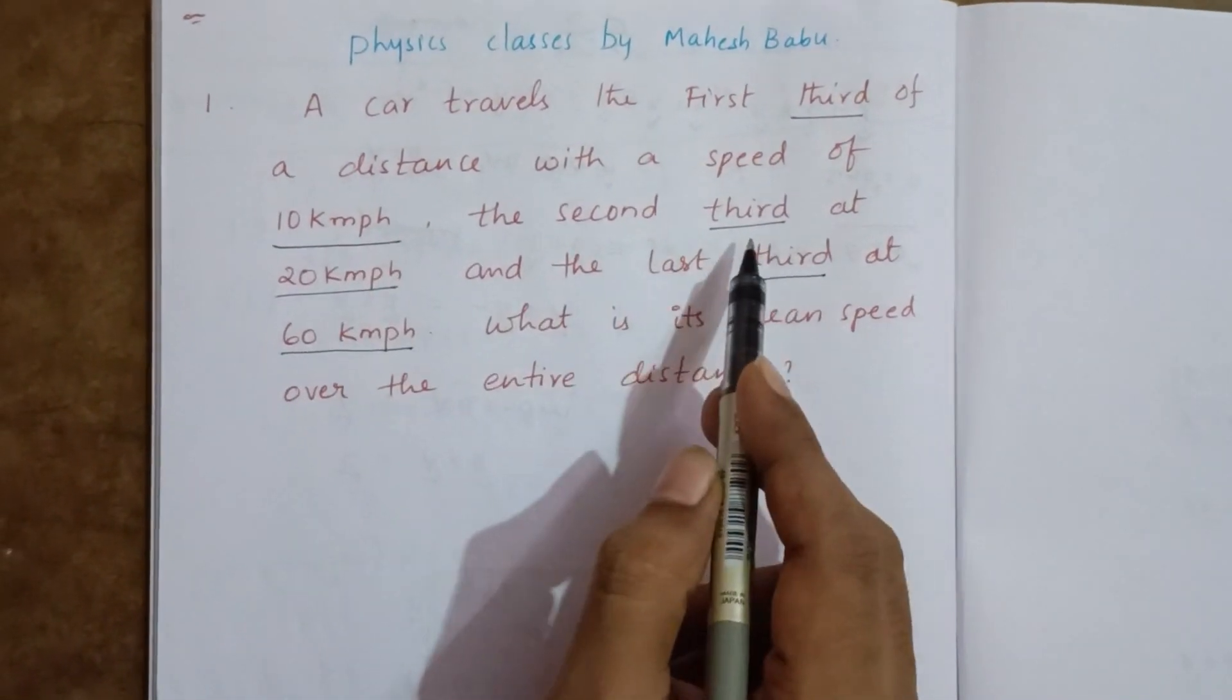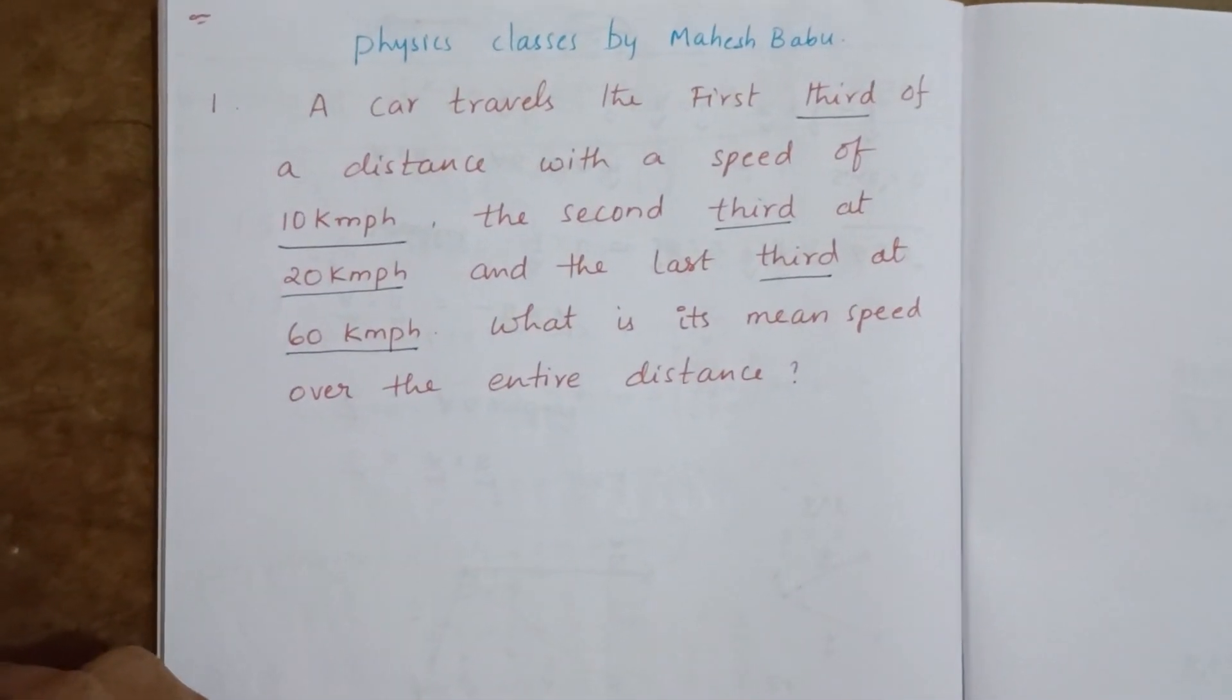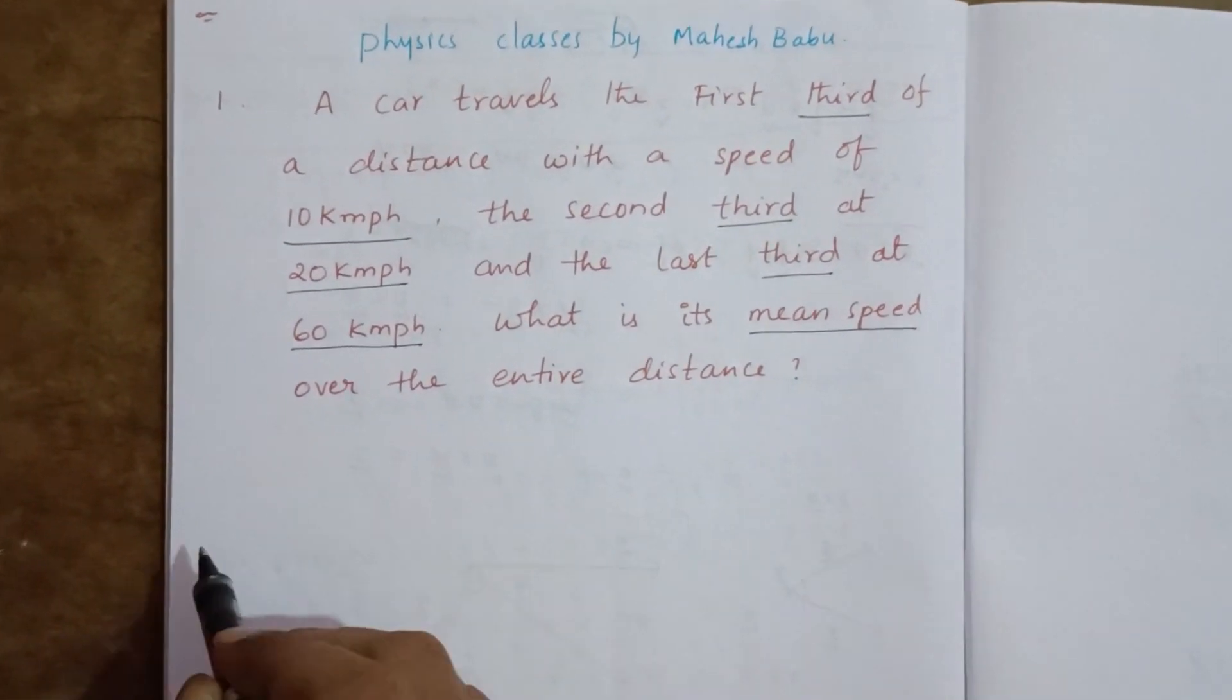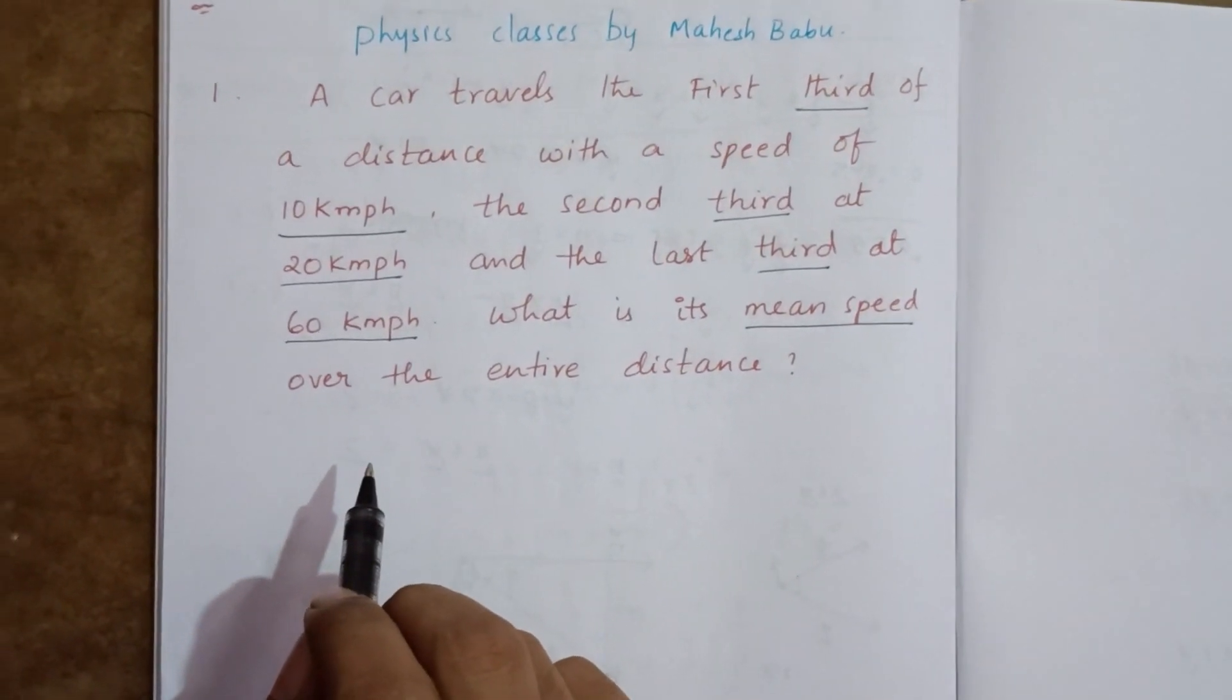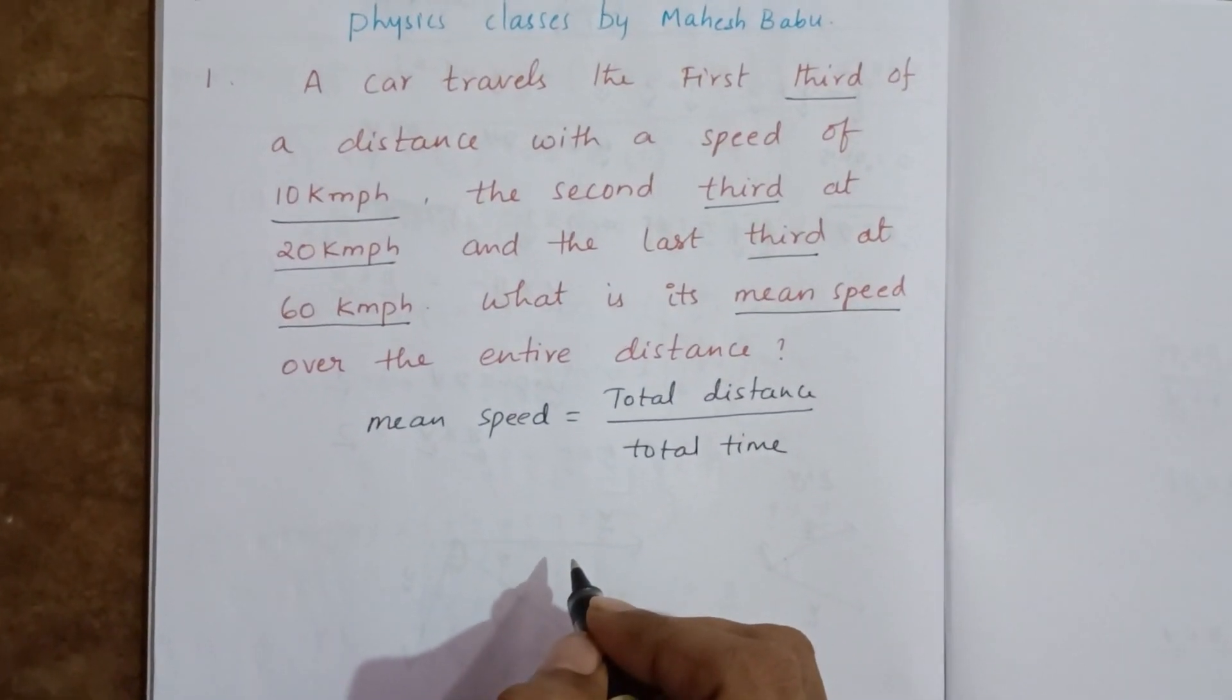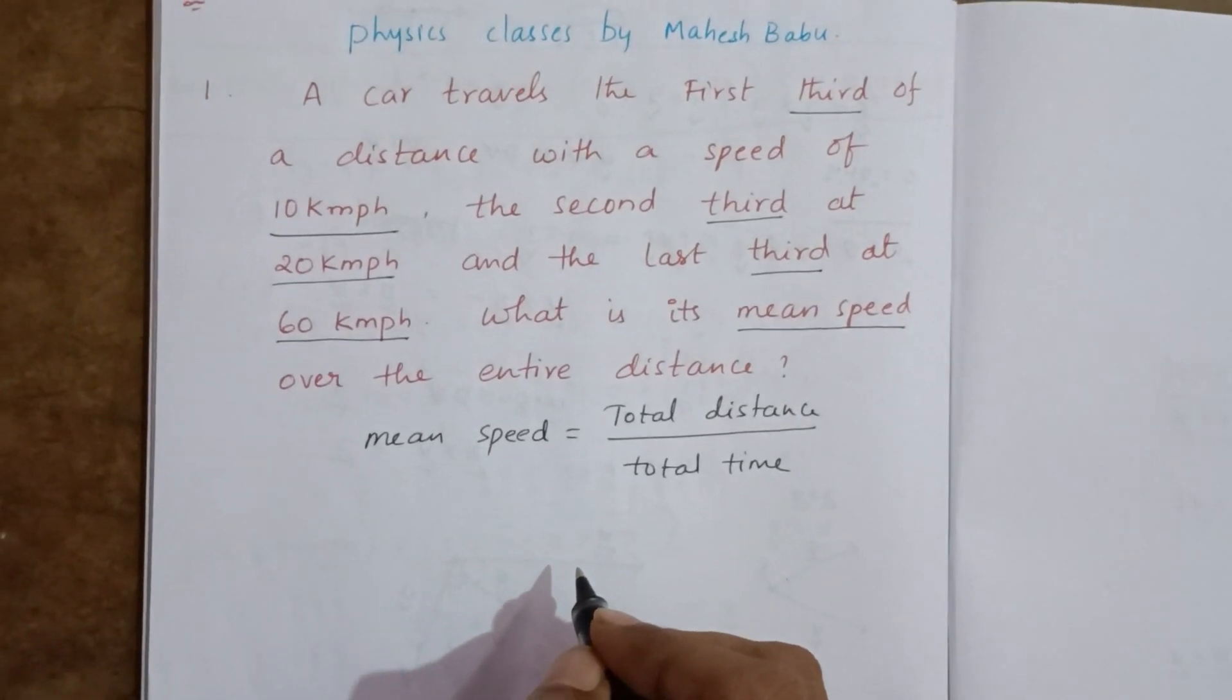First third 10, second third 20, last third 60 km per hour. What is its mean speed over the entire distance? The formula for mean speed is: mean speed equals total distance divided by total time.